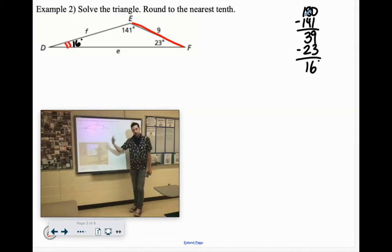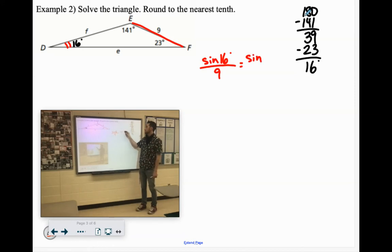So when we're setting up our sine ratios, that's going to be our constant. We could say sine of 16 degrees over 9 equals, and then we'll pick one of the other angles. Let's say sine of 23 degrees over the corresponding side is F.